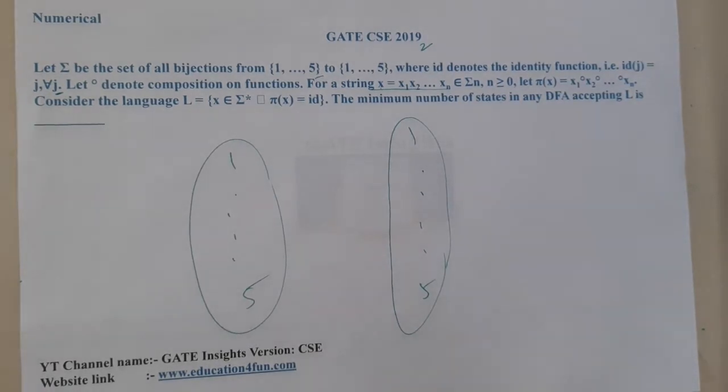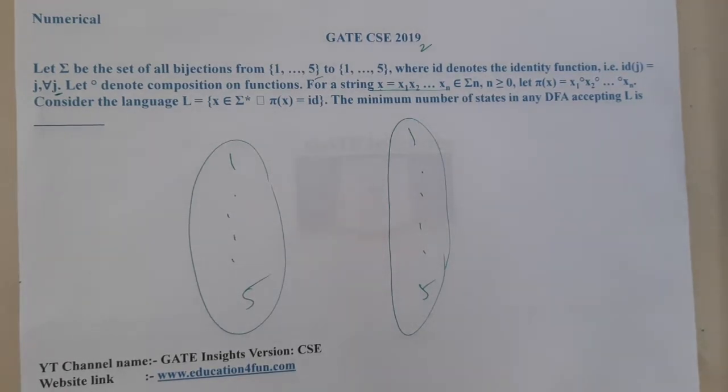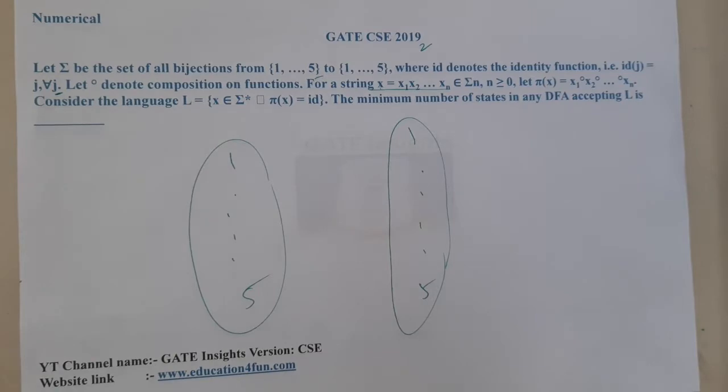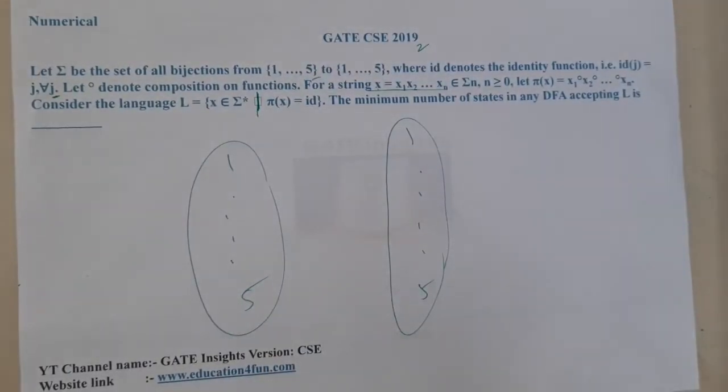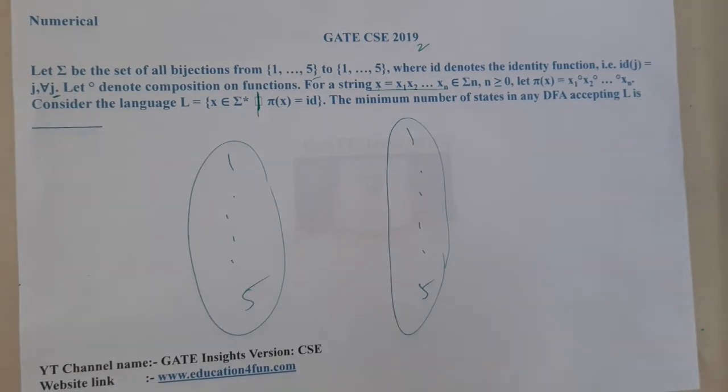Consider the language L = {x belongs to sigma star such that π(x) = id}. The minimum number of states in any DFA accepting L is... I think this is a combination of TOC and discrete mathematics because these are functions.